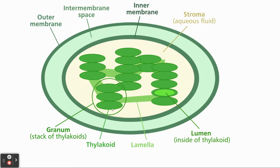The granum is made out of thylakoids. Something new is called the lumen — the inside of the thylakoid. Surrounding all of the thylakoids is something called the stroma, or the aqueous fluid.